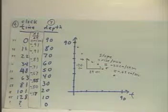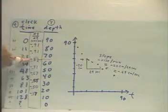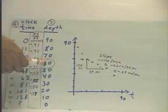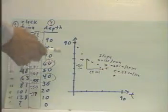The calculation we've just done, calculating the average rate of change between the points 34 seconds, 60 centimeters, and 63 seconds, 40 centimeters,